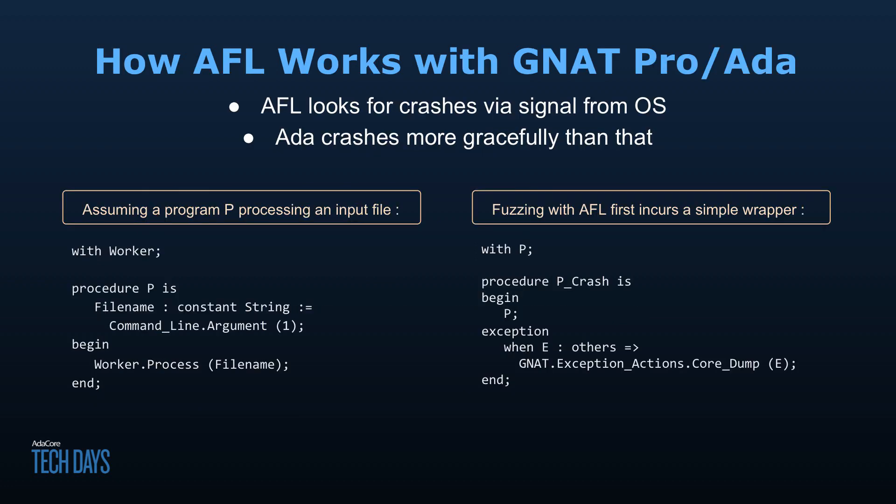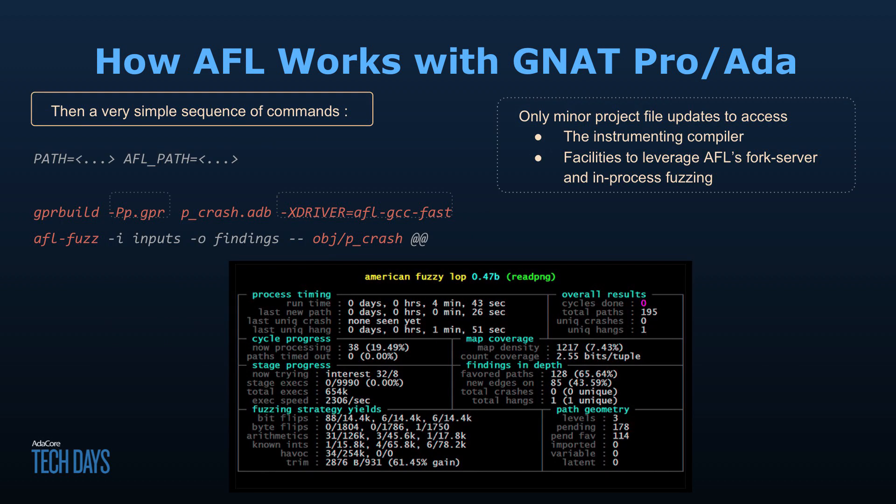There are two main things to know when specifically fuzzing with AFL and Ada. First, AFL looks for crashes via a signal from the OS, but in Ada, if an exception propagates to the top-level handler, it'll just terminate without sending that signal. The solution is to configure it so that when there's an exception, it does a core dump, which sends the signal AFL is looking for. Then you simply build your project, run AFL fuzz, and you're up and running — it's very easy.